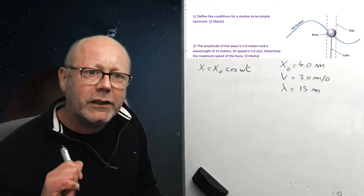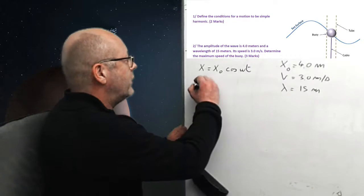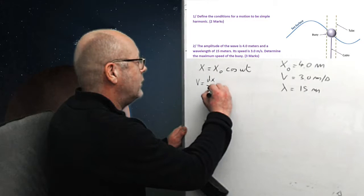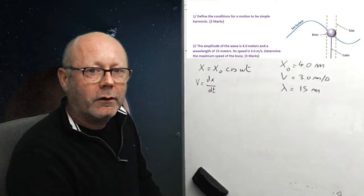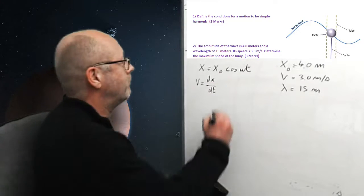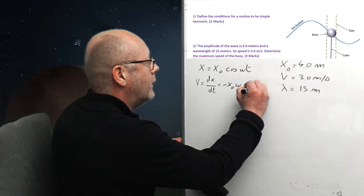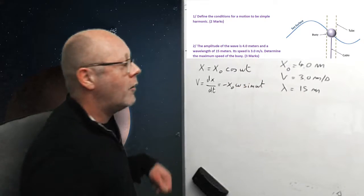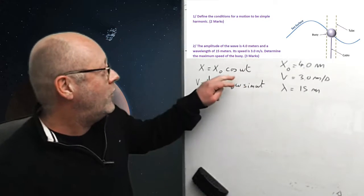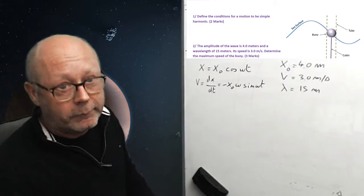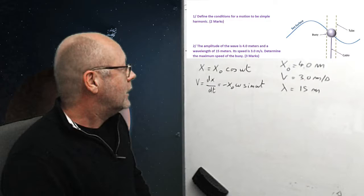But we're interested in velocity, right? So, what is velocity? Yeah. Velocity is the variation of position with time. So, we can differentiate this. We get minus x0, omega, sine, omega t. Remember your math, right? When you differentiate cos, you get minus sine. And if you have something inside, it goes outside. Yeah?